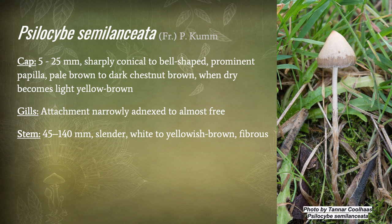The gill attachment is narrowly adnexed to almost free. The stem can vary quite a bit in height, between 45 to 140 millimeters. They're quite slender, white to a yellowish brown, and very fibrous.